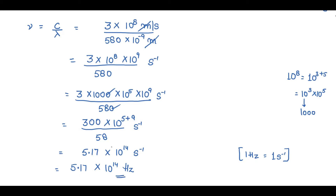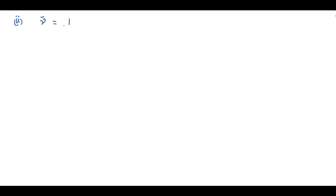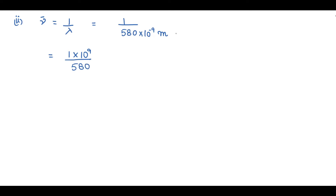Now let's find the wave number. Wave number nu bar is the inverse of wavelength, so nu bar equals 1 by lambda. Lambda is 580 × 10⁻⁹ meters. Taking 10⁻⁹ to the numerator gives 10⁹ divided by 580, with units of meter inverse.